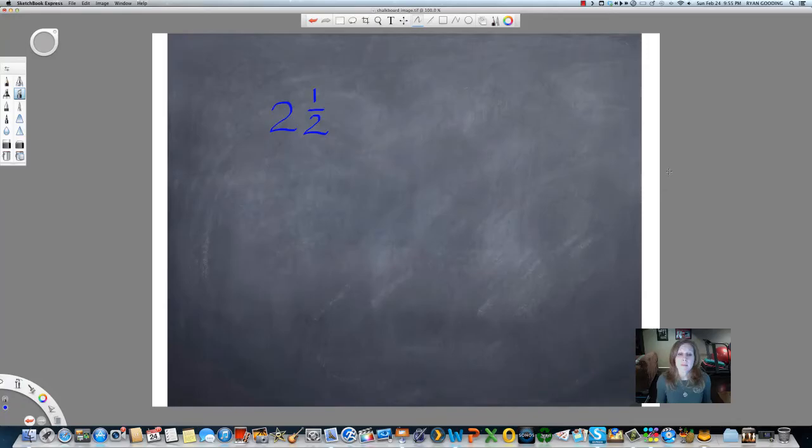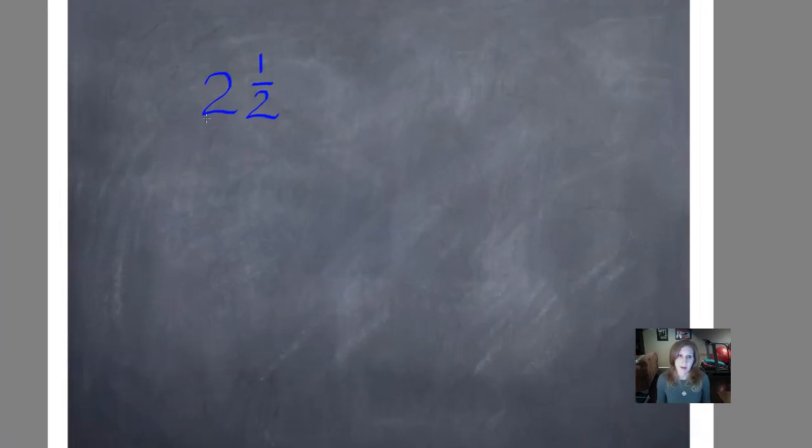So I've written the mixed number two and one half. Two is the whole number right here, this big two. And then one half is the fraction that's with it. So we have a whole number and a half, which is less than one.